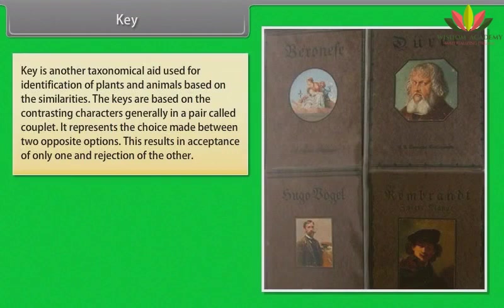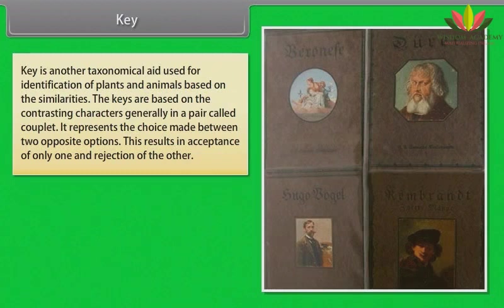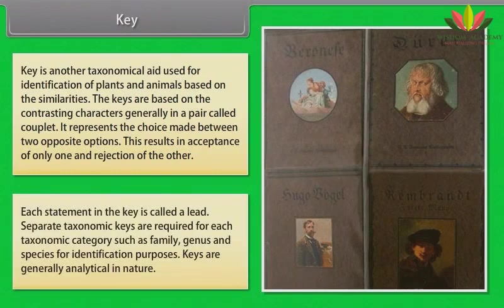Key: A key is another taxonomical aid used for identification of plants and animals based on similarities. Keys are based on contrasting characters generally in pairs called couplets. It represents a choice made between two opposite options, resulting in acceptance of only one and rejection of the other. Each statement in the key is called a lead. Separate taxonomic keys are required for each taxonomic category such as family, genus and species. Keys are generally analytical in nature.